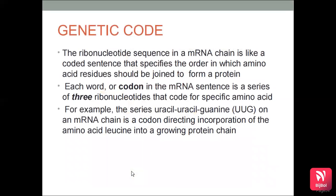The ribonucleotide sequence in the mRNA chain is like a coded sentence specifying the order in which amino acid residues should be joined to form a protein. Each word or codon in the mRNA sentence is a series of three ribonucleotides that code for a specific amino acid. For example, the series uracil-uracil-guanine on the mRNA chain is a codon directing the incorporation of the amino acid leucine into a growing protein chain.